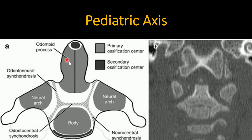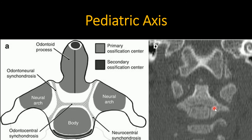Here is the pediatric axis showing the odontoid primary ossification center, the two neural arches, one for the body, and the secondary ossification center — a total of five ossification centers. The odonto-central synchondrosis lies between the dens and the body, and the neurocentral synchondrosis is also shown. A coronal section demonstrates the ossification centers and synchondroses.